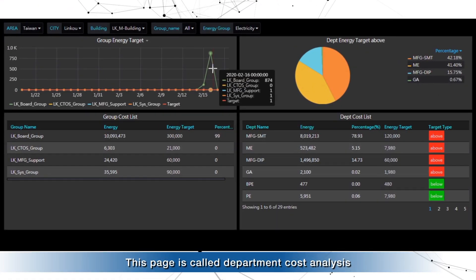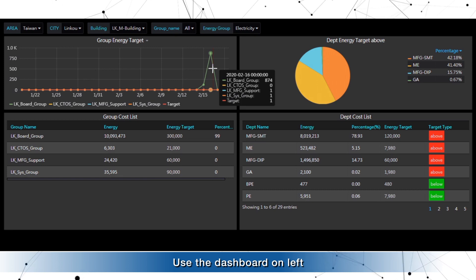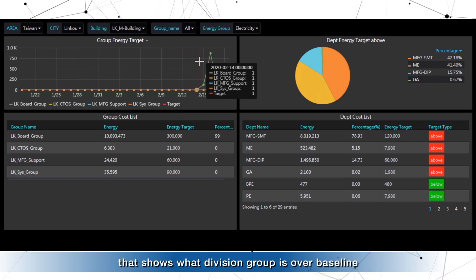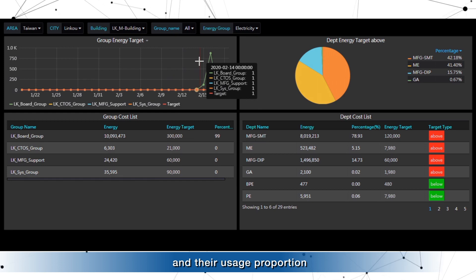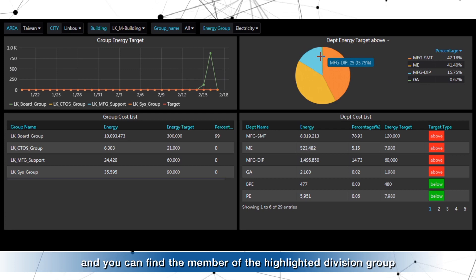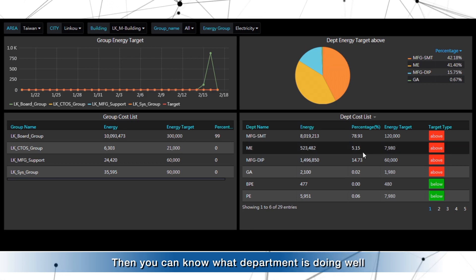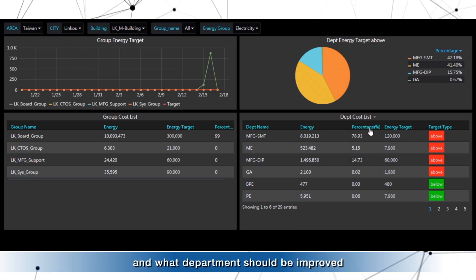This page is called Department Cost Analysis. When you manage energy performance, you don't have to check each division one by one. Use the dashboard on the left. It shows which division group is over baseline and their usage proportion. Check out the panel on the right side, and you can find members of the highlighted division group. Then you can know what department is doing well and what department should be improved.